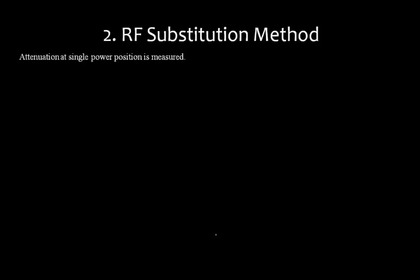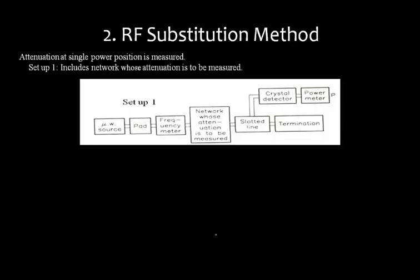Next is the RF substitution method, where attenuation is measured at a single power position. In setup one, you have a microwave source, a pad, a frequency meter, and the network whose attenuation is to be measured, connected to a slotted line terminated with a matched termination, then a crystal detector to measure the power.